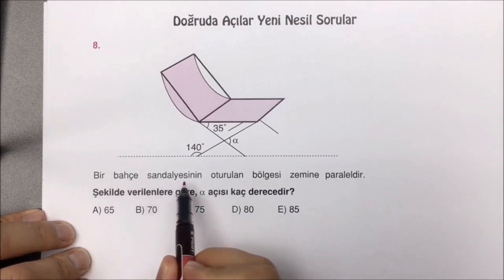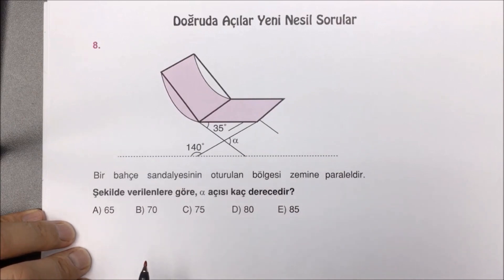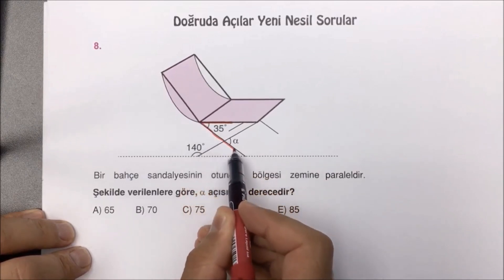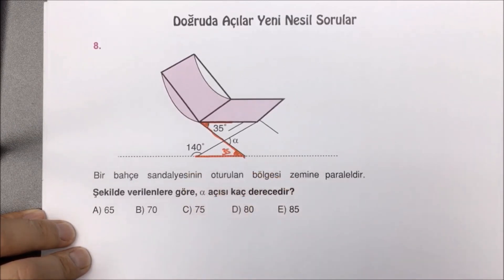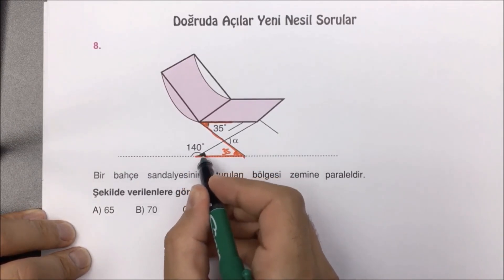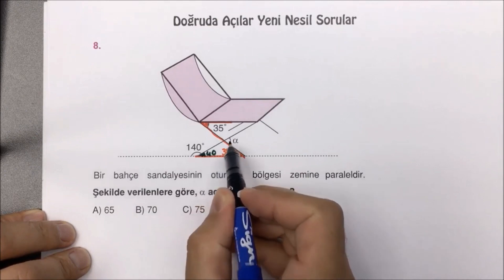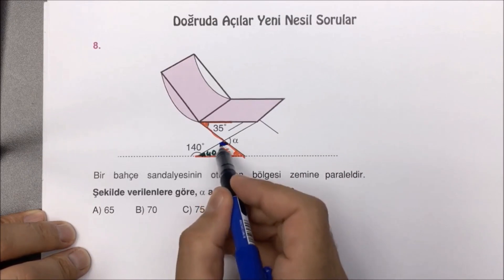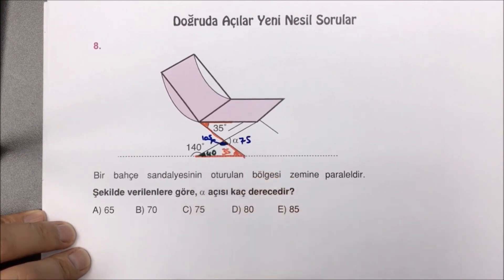Sekizinci sorudayız: bahçe sandalyesinin oturulan bölgesi zemine paraleldir. Verilenlere göre alfa açısı kaç derecedir? Paralellik var, Z harfi yapıyorum: 35 dereceyi şuraya taşıyabilirim. Burada bir doğru açı var; 140'ü tamamlarsak 40 kalacak. 40 ile 35 toplarsak 75; dolayısıyla bu açıya 105 kalır. 105'i 180 derece tamamlayan açıya 75 derece kalır. Aradığımız yanıt C seçeneğidir. İzlediğiniz için teşekkür ederim.